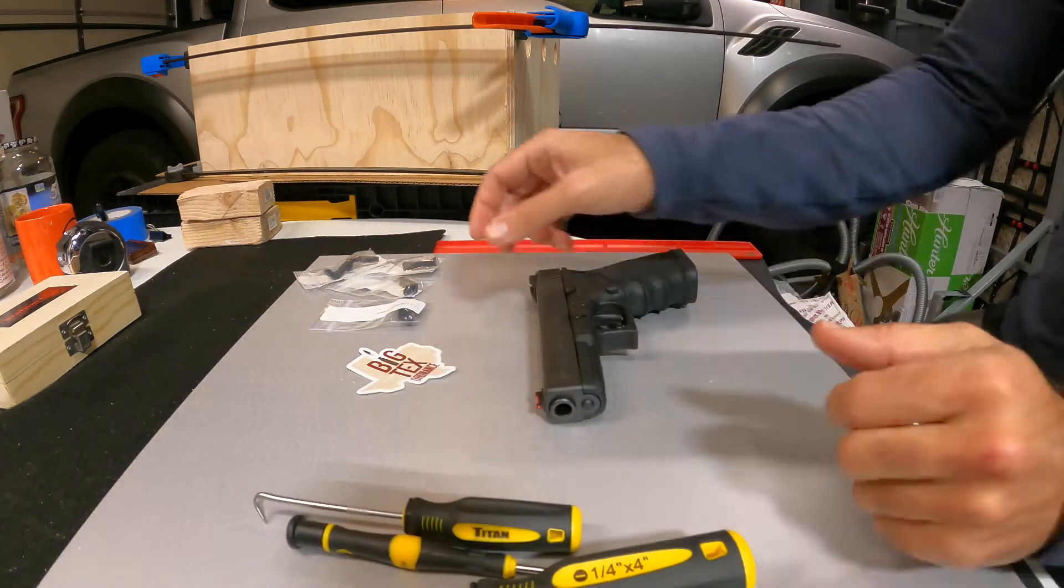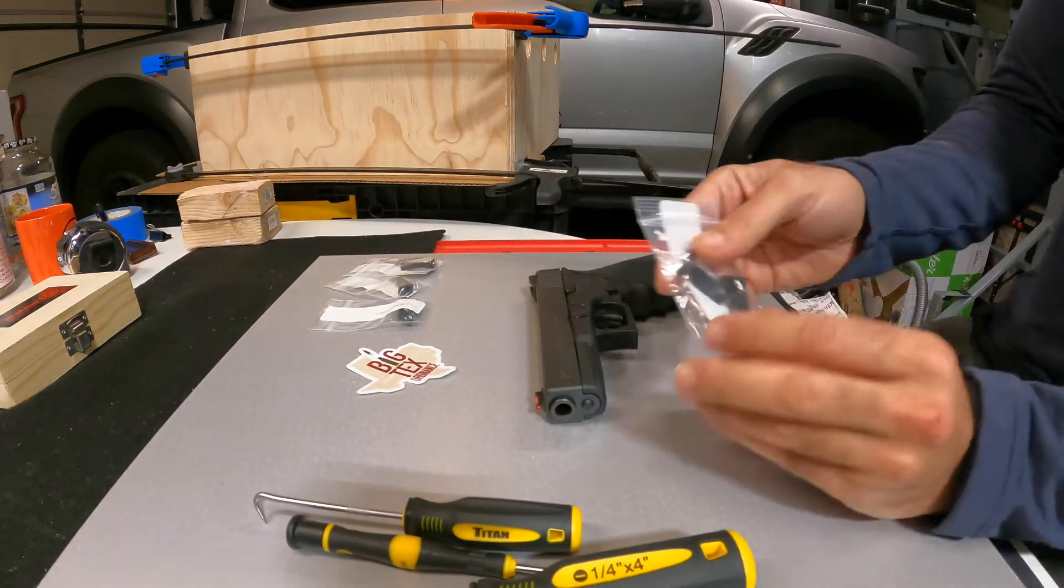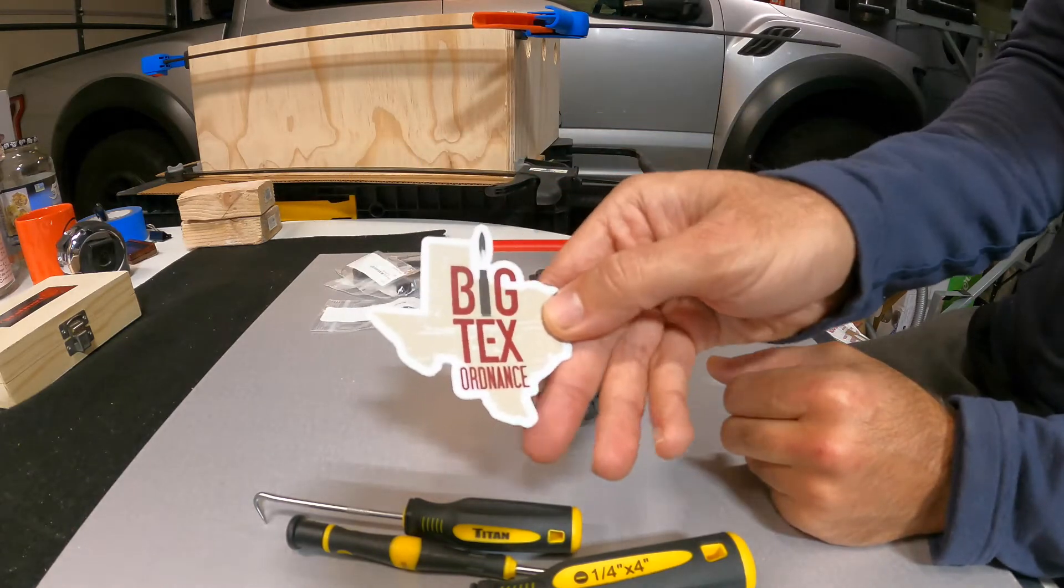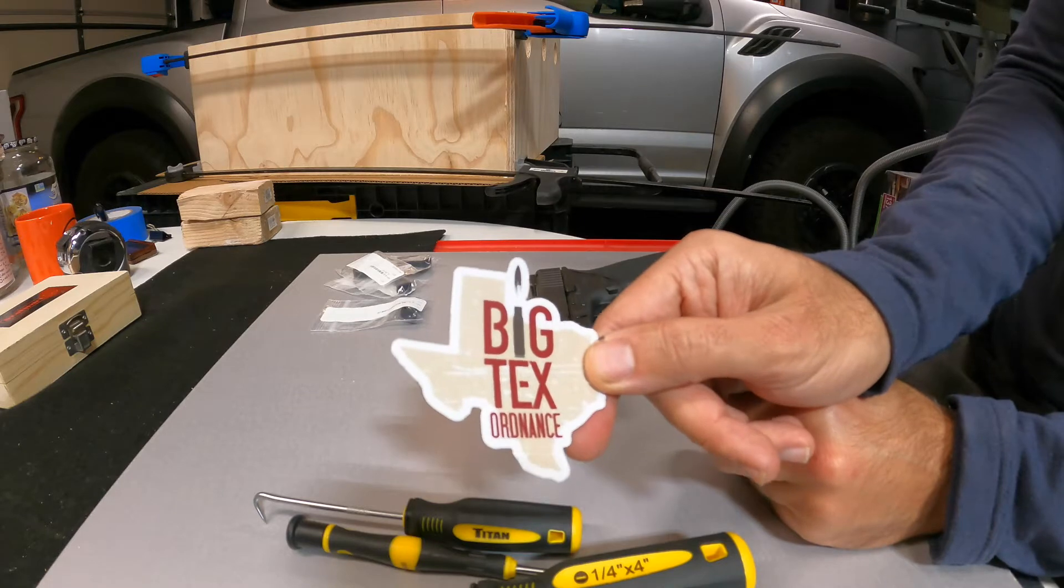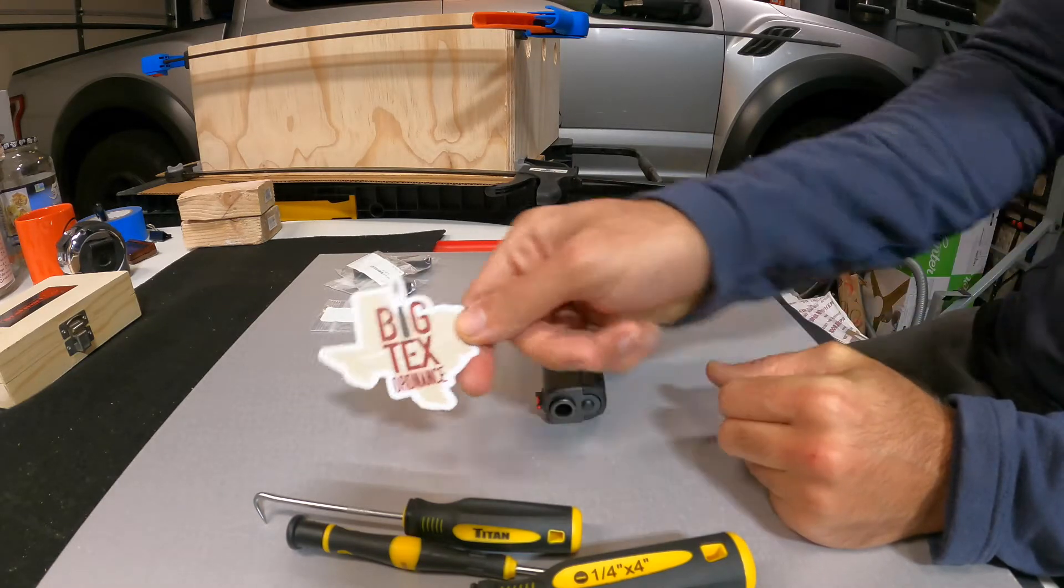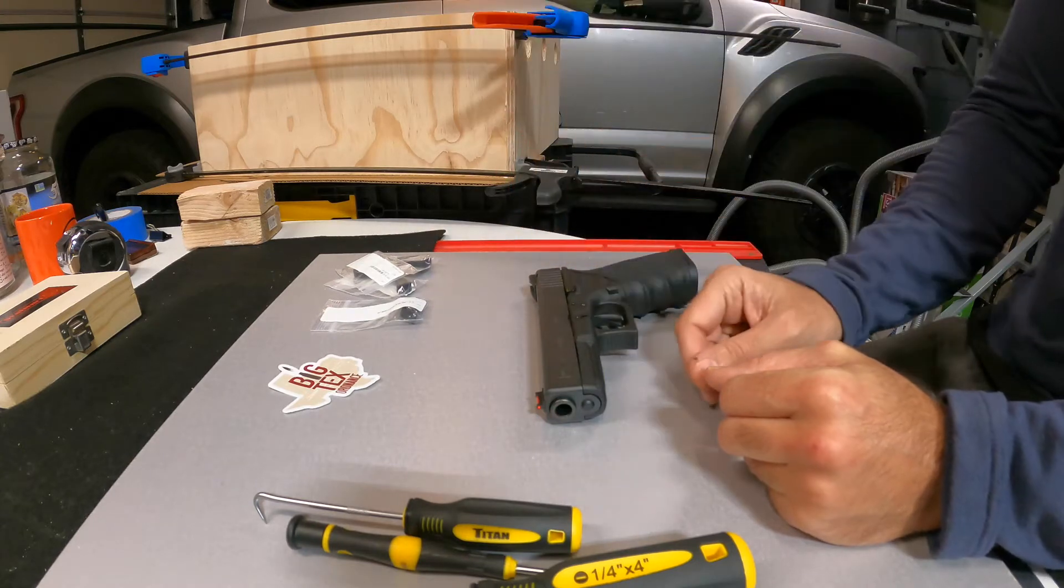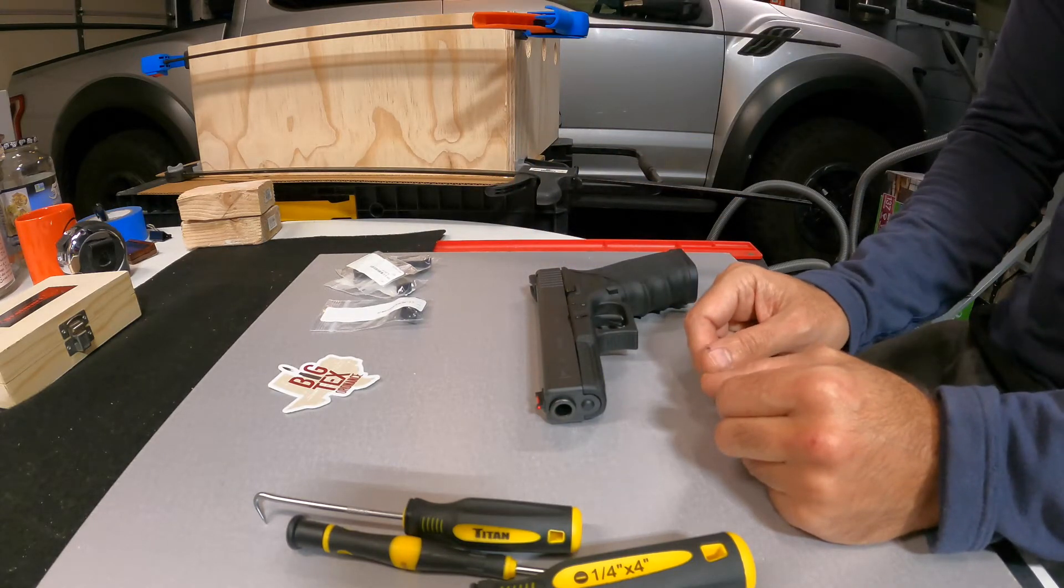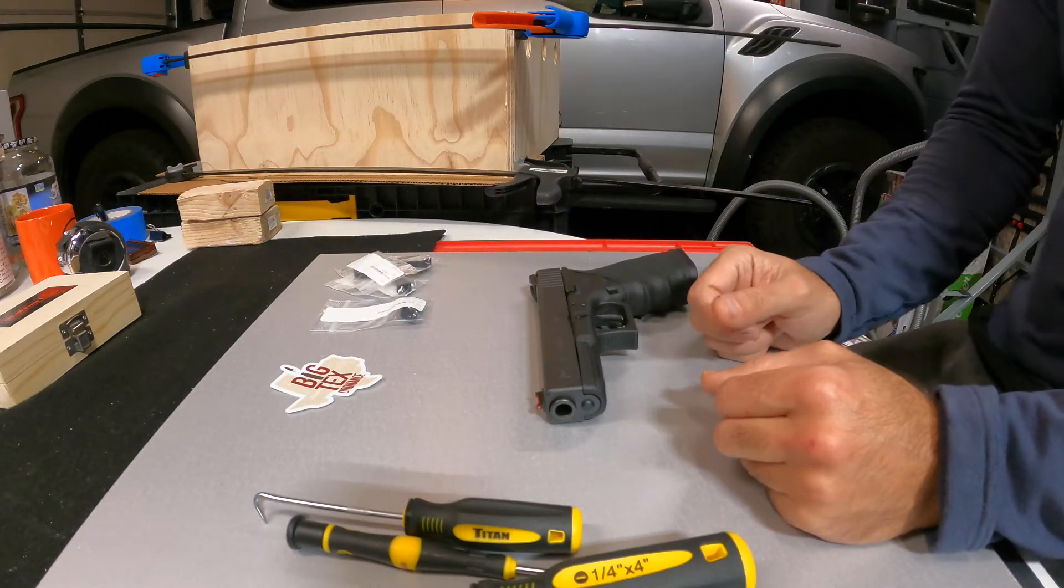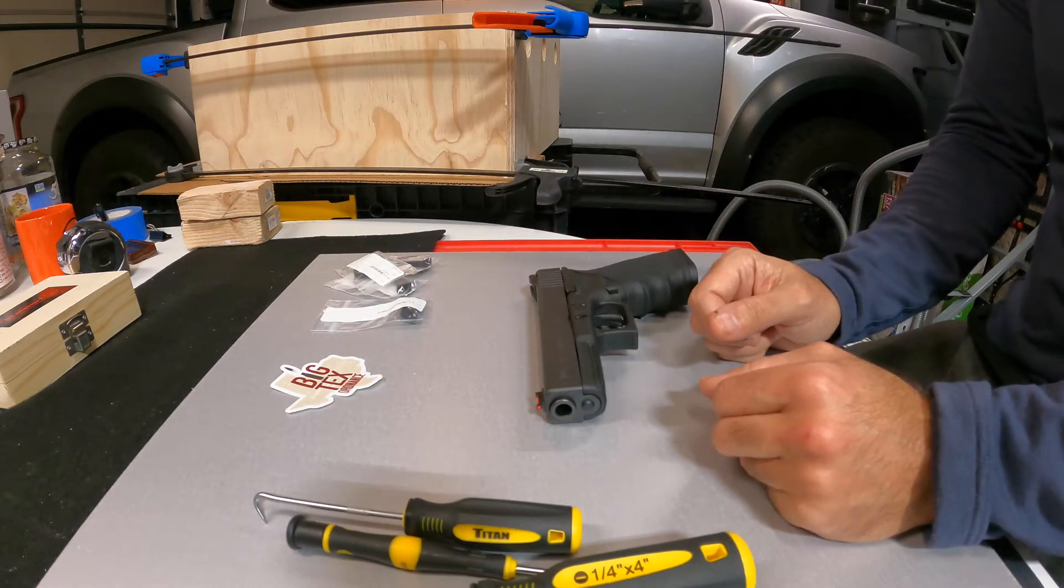Today I got these Glock OEM style extended magazine releases. Ordered a couple from Big Tech's Ordinance, my first order from them, and I'm really happy with the speed of shipment. They put a copy of the Constitution in the order and there was some candy in there, so Big Tech's Ordinance is a good place to get everything you need.